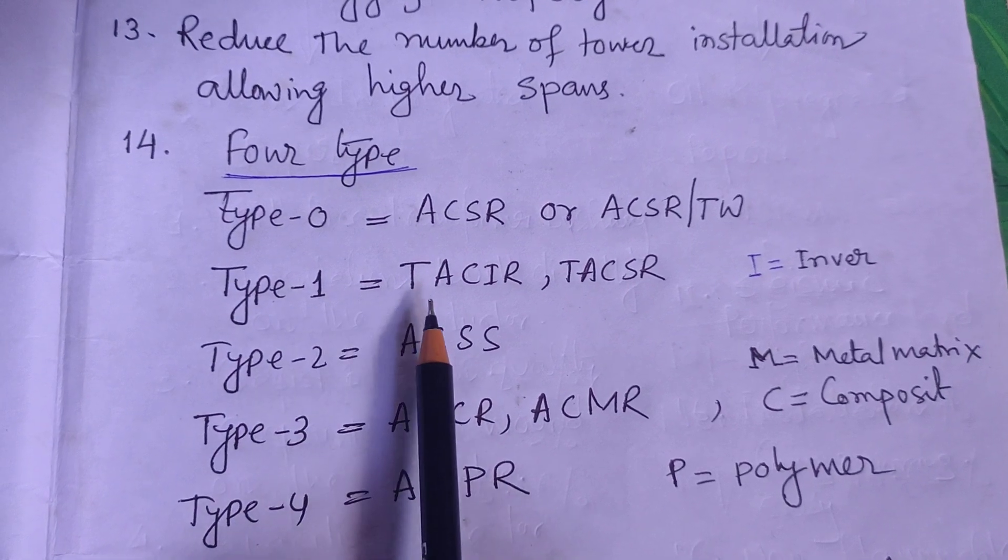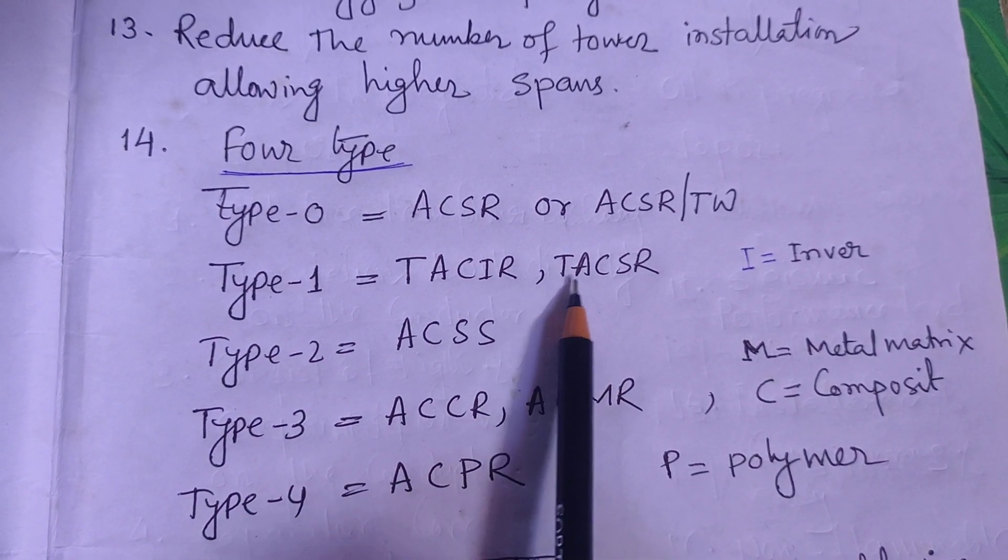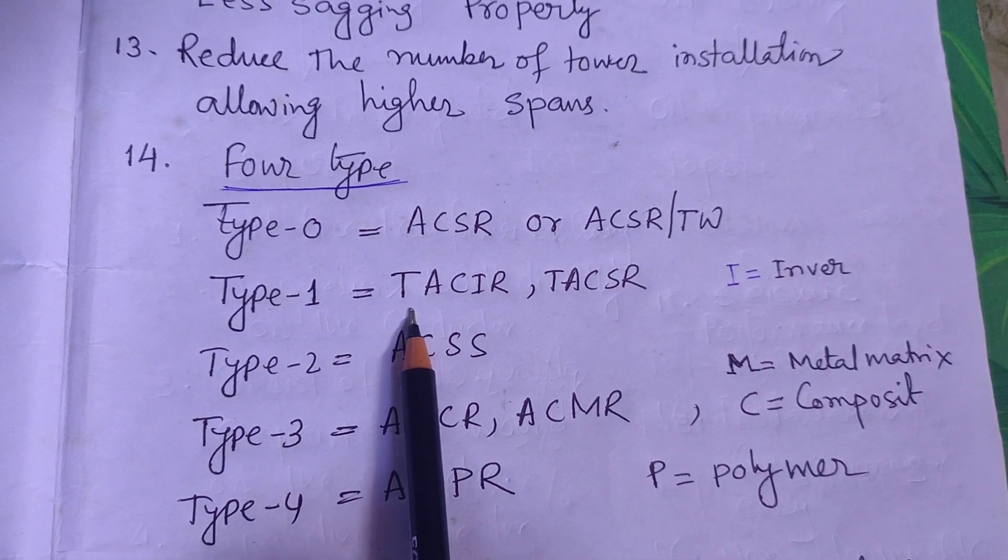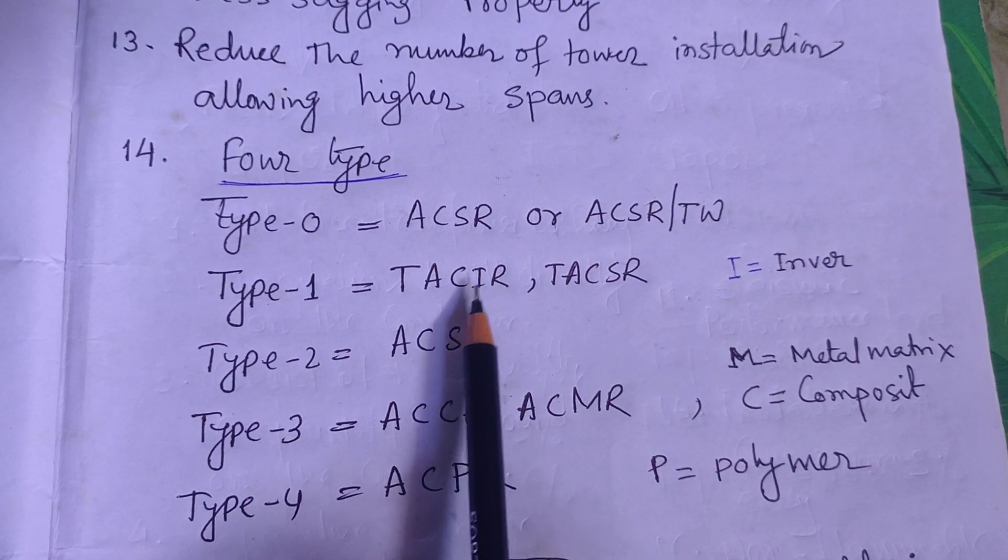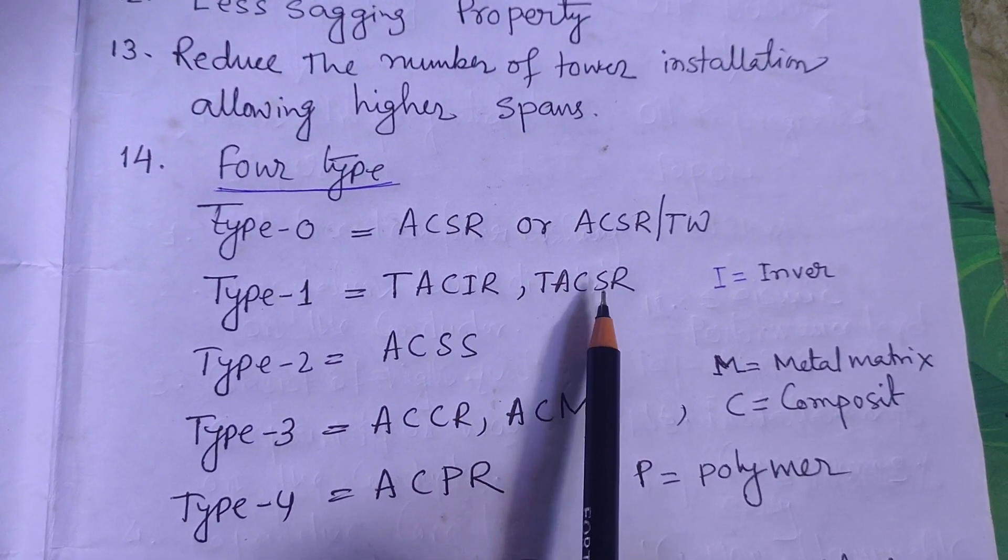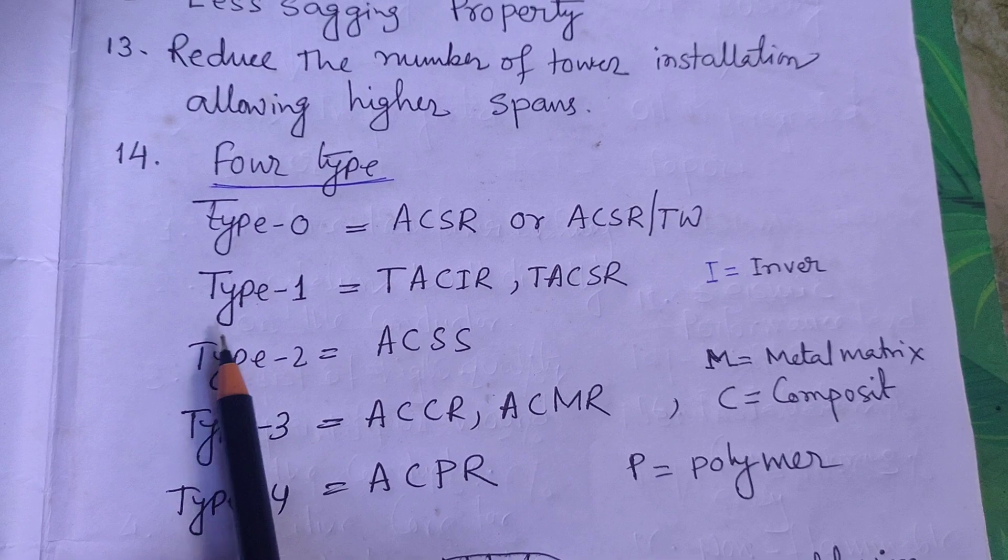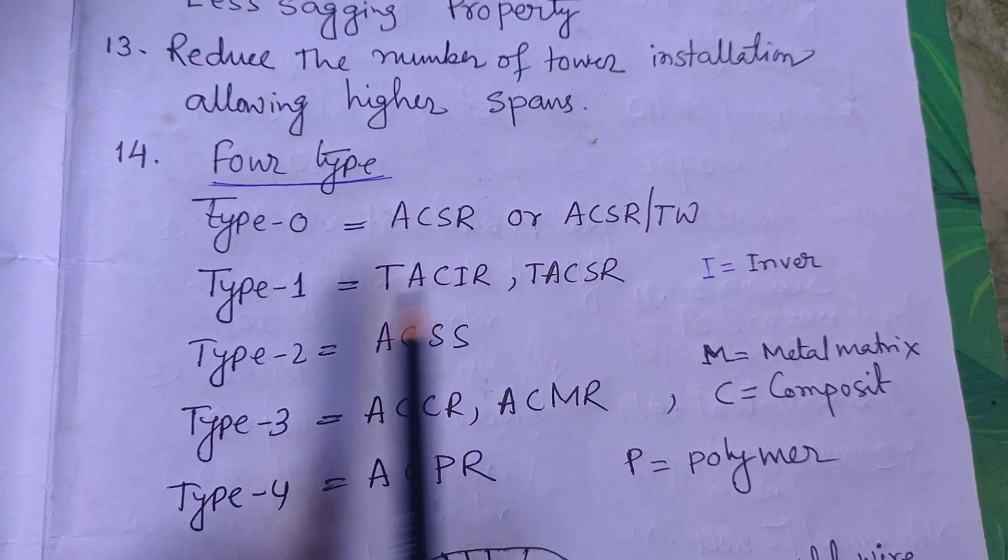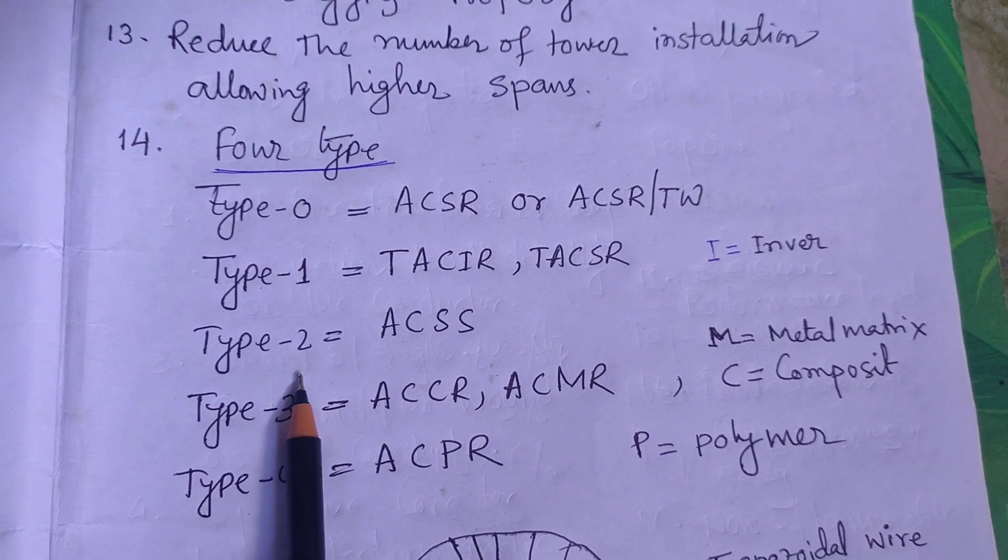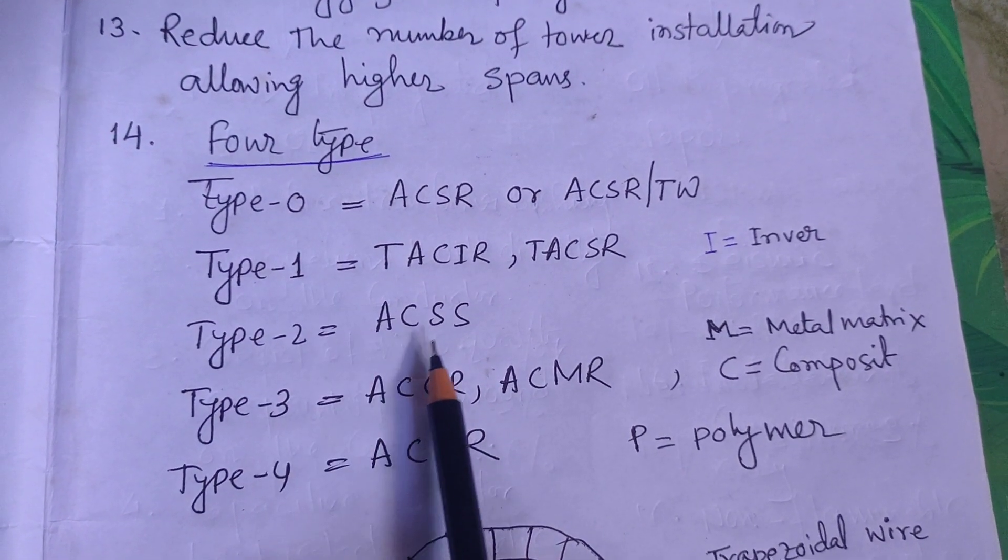Type 1 includes TACIR and TACSR - Thermal Aluminum Conductor Invar Reinforced and Thermal Aluminum Conductor Steel Reinforced. Type 2 of HTLS is ACSS, which stands for Aluminum Conductor Steel Supported.